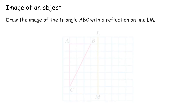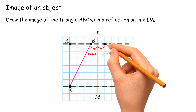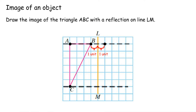Draw the image of triangle ABC with a reflection on line LM. Step 1: Select any vertex and construct a perpendicular line from the vertex to line LM, extending beyond the axis of reflection. Step 2: Draw parallel lines to all other vertices. Step 3: Determine the distance of each vertex from the axis of reflection, and mark an equal distance from the axis on the same line. Do the same for all vertices.